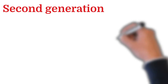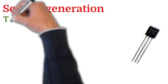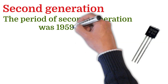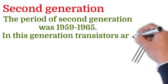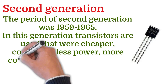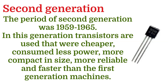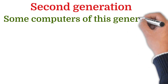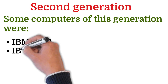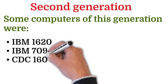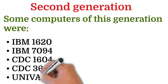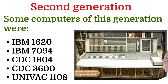The second generation computers spanned the period 1959 to 1965. In this generation, transistors were used, which were cheaper, consumed less power, were more compact in size, more reliable and faster than first generation machines. Some computers of this generation were IBM 1620, IBM 7094, CDC 1604, CDC 3600, and UNIVAC 1108.